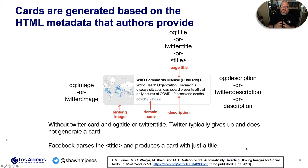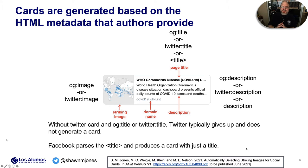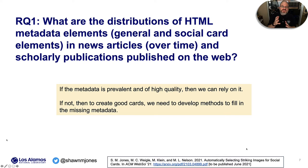Cards are generated based on the HTML metadata that authors provide. Facebook has its own standard called Open Graph Protocol, so all of its fields begin with 'og:'. Twitter has its own standard called Twitter Cards, and all of its fields begin with 'twitter:'. So in order to specify what title should appear in the card on Facebook for your page, you insert og:title and then the value for that field, and the same thing for description and image. This brings us to our first research question: what is the distribution of HTML metadata elements in news articles and scholarly publications published on the web? If this metadata is prevalent and of high quality, we can rely on it. If not, we have to develop methods to fill in the missing metadata to produce good summaries and good cards.